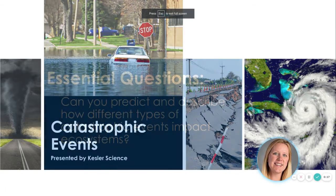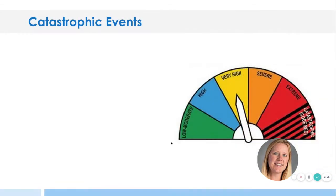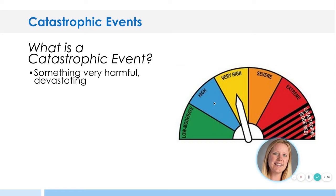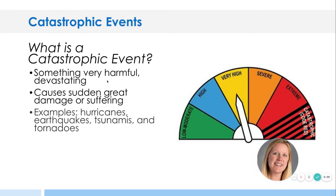Catastrophic events. Your essential question: Can you predict and describe how different types of catastrophic events impact an ecosystem? What is a catastrophic event? It's not something that's just moderate. It's something that's beyond extreme, something very harmful or devastating, causing sudden and great damage or suffering.